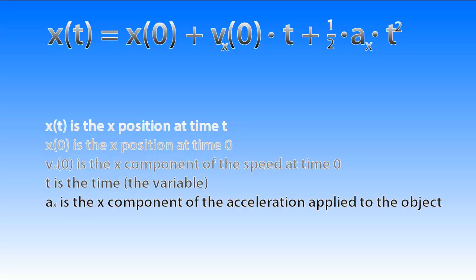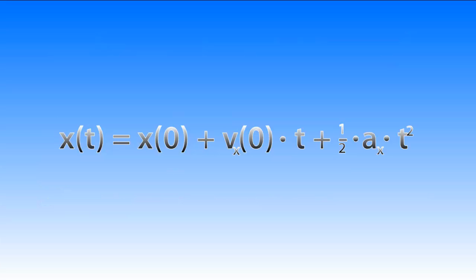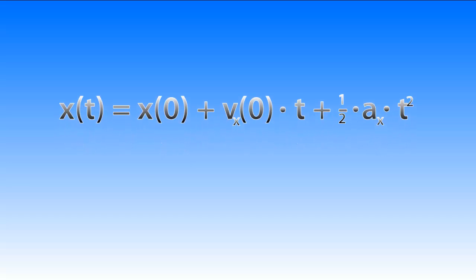x0 is the x position at time 0, vx0 is the x component of the speed at time 0, and t is the time, the variable we're trying to solve for. ax is the x component of the acceleration applied to the object. So because this is a two-dimensional problem, we need a second equation for the y-direction, which is this one.